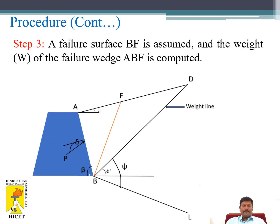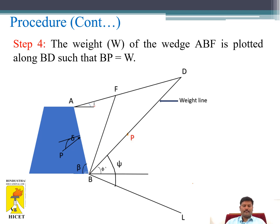Step 3: A failure surface BF is assumed and weight of the failure wedge ABF is computed. Step 4: The weight of the wedge ABF computed in the previous step is plotted on the line BD.